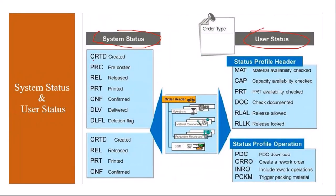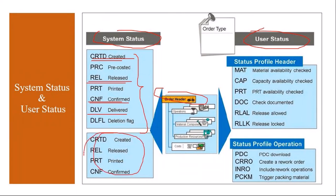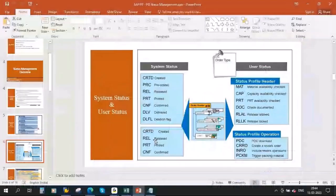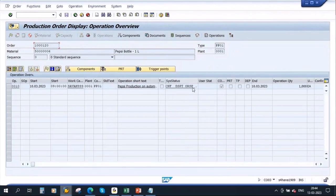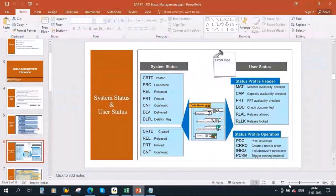These statuses exist at header level, and also for operations. If you go to the operations tab in an order, there is also a status there — for example, it may already show as confirmed. So you can have the status at header level and operation level. System statuses are changed automatically. For instance, if I go to CO01 and create a fresh production order, you can see the status is CRTD — created. If you click the I button, the status shows as 'Created'.